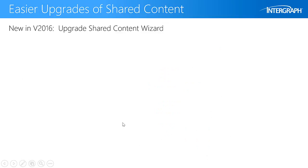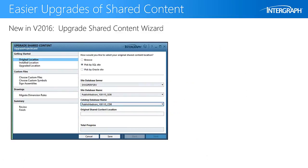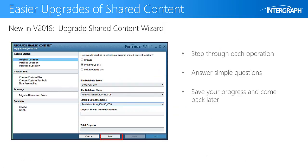In version 2016, this process is easier with a new wizard that guides you through the shared content upgrade from start to finish. The steps in the wizard are on the left, and simple questions for each step are on the right. At any point, you can save your progress and come back later to complete the steps and submit the upgrade.